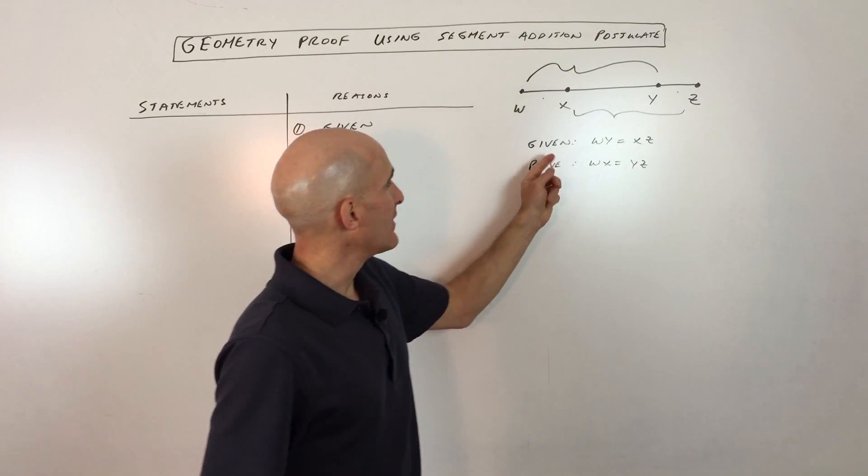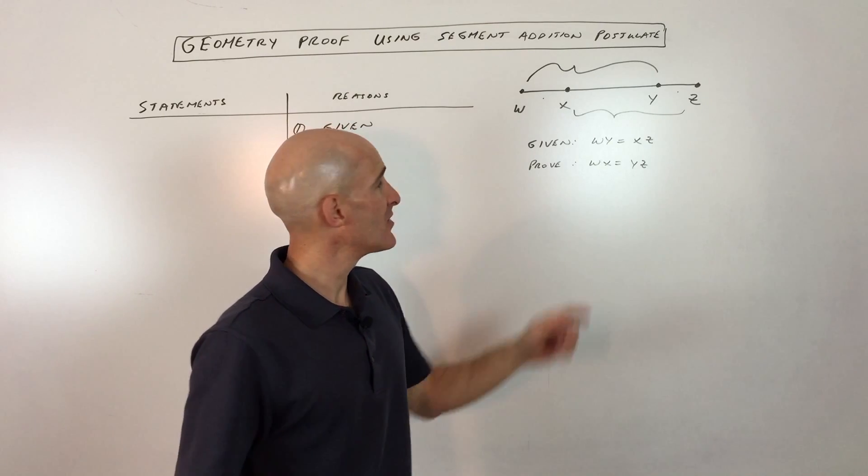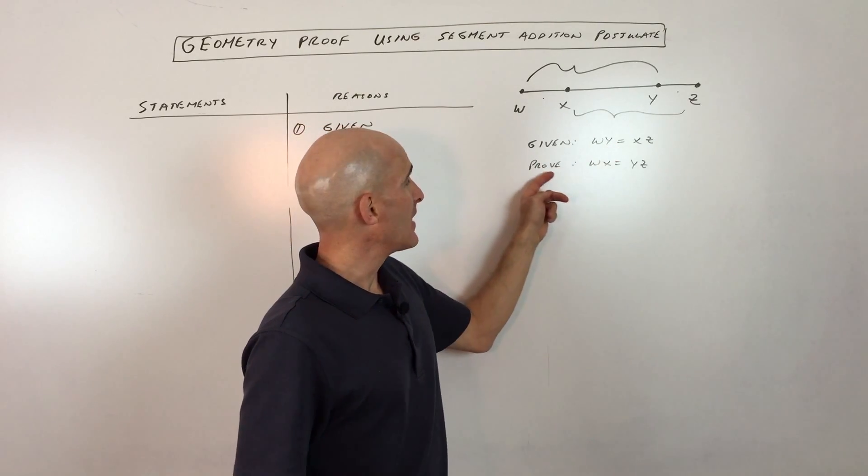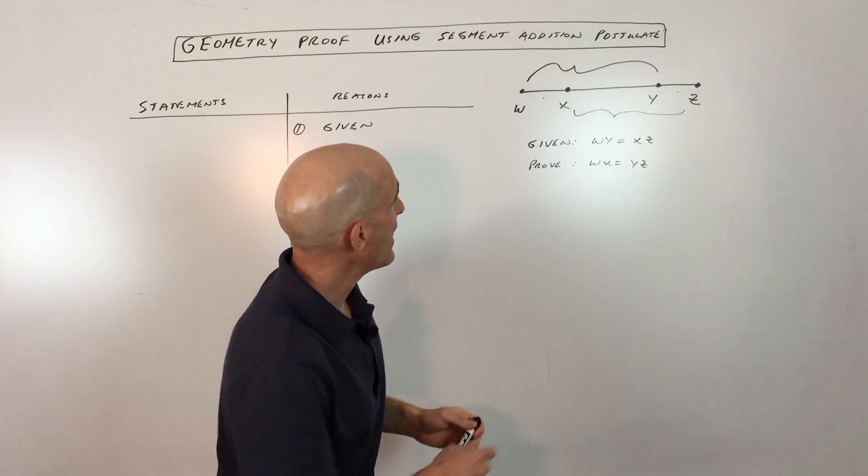They give us a diagram here, and they give us the givens, which basically are hints or clues. So when you see the givens, that's a hint. And then they tell us what they want us to prove.